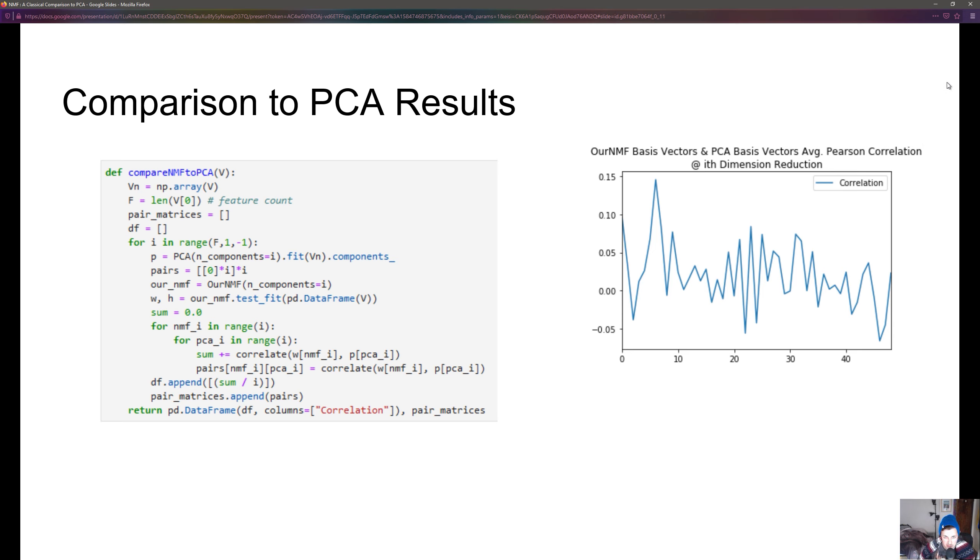In this function we're actually comparing NMF to PCA. We are getting a matrix of all the basis vector pairs for each iteration of the dimensionality reduction algorithm. Looking on the right side of the slide you can see the graph and this is with an input of 50 which tells us that the input matrix is going to be 50 by 50.